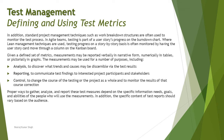Lean management techniques are used where testing progress on a story-by-story basis is monitored by having the user story card move through columns on a Kanban board. In agile methodologies we use Kanban or scrum boards with columns like To Do, In Progress, Verify, and Done. Cards move from column to column to reflect progress, and once acceptance criteria is met, the task is marked as done.